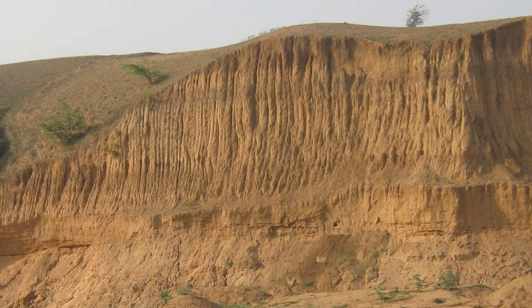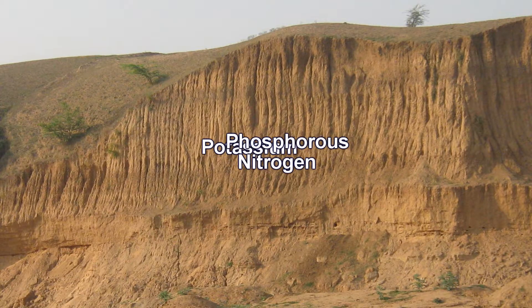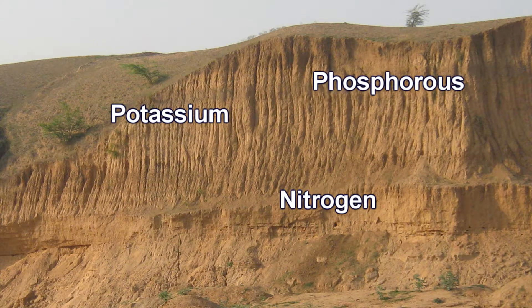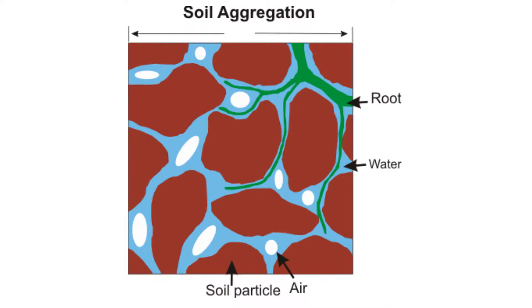The elements important for life that are present in soil include potassium, phosphorus, and nitrogen — all important for plant growth. The pore spaces are occupied by air and water, which is very important because plants derive gases as well as their water requirements from these pore spaces.